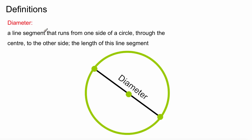Diameter — diameter is the line segment that runs from one side of the circle through the center to the other side. So from edge to edge, but passing through the center — very important. There's another designation for a line that runs end to end, and those are called chords, which we'll go through in a second. But diameter runs through the center. Take down the definition and copy the example, and make sure you're using a compass.